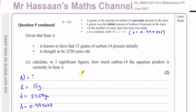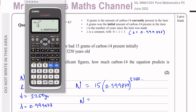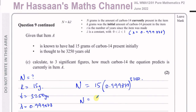So we need to find n. We know k is 15, lambda is 0.999878, and t is 3,250. Simply putting that into the calculator: 15 times 0.999878 to the power of 3,250 gives 10.103... To three significant figures, n equals 10.1 grams. That's the amount of carbon-14 currently predicted to be in item A.